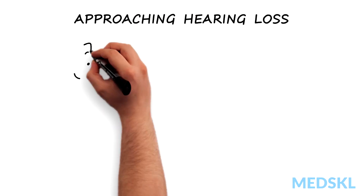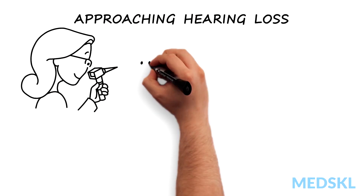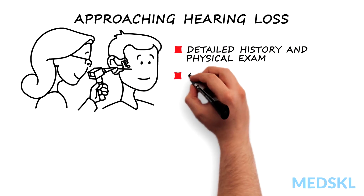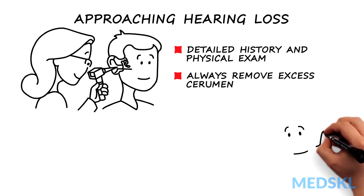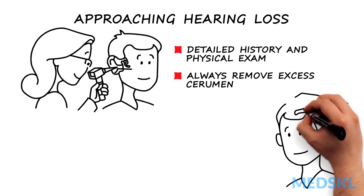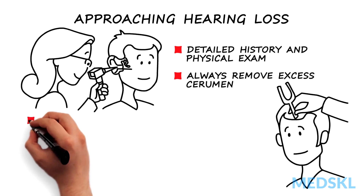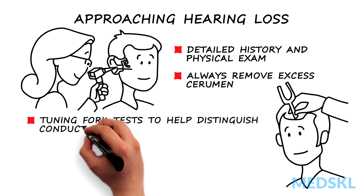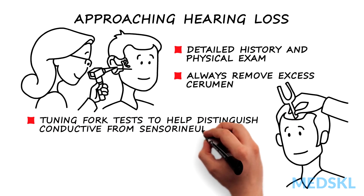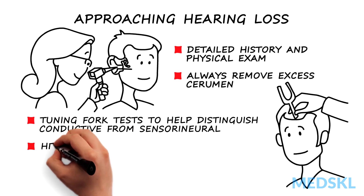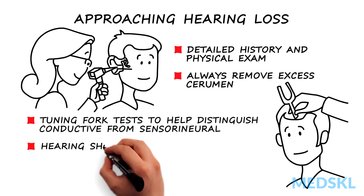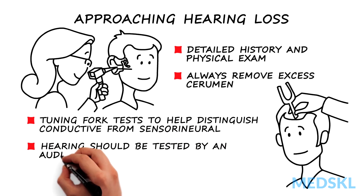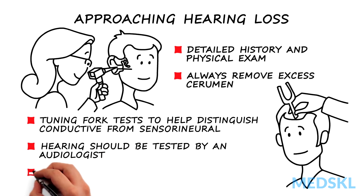A detailed history and physical examination are instrumental to determine the correct diagnosis. Always remove excess cerumen to clearly visualize the tympanic membrane during otoscopy. Tuning fork tests, the Weber and Rinne, can be helpful in distinguishing conductive from sensorineural hearing loss. Hearing should be tested by an audiologist with assessment of pure-tone thresholds with air and bone conduction, speech detection threshold, and speech discrimination.